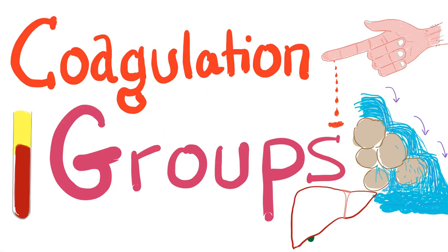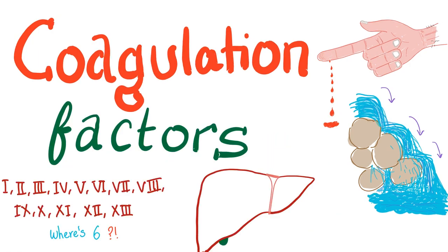Hey guys, it's Medicosis Perfectionalist resuming our bleeding and coagulation playlist. In this video, we'll talk about coagulation groups. We have three groups: we have the fibrinogen group, we have the prothrombin group, and we have the contact group. Please watch the previous video on coagulation factors before watching this one.